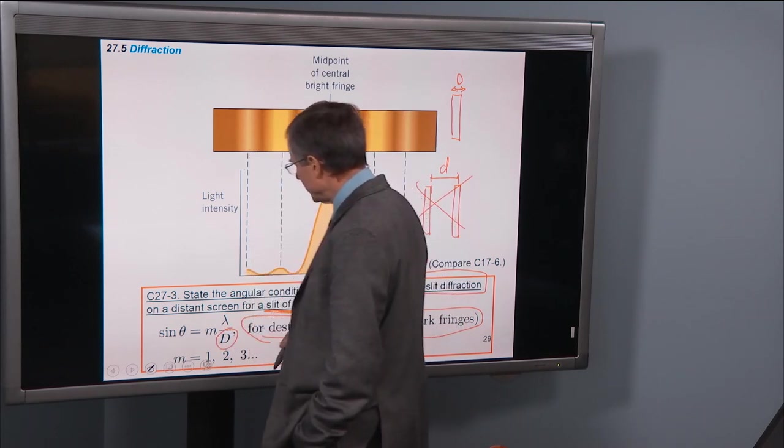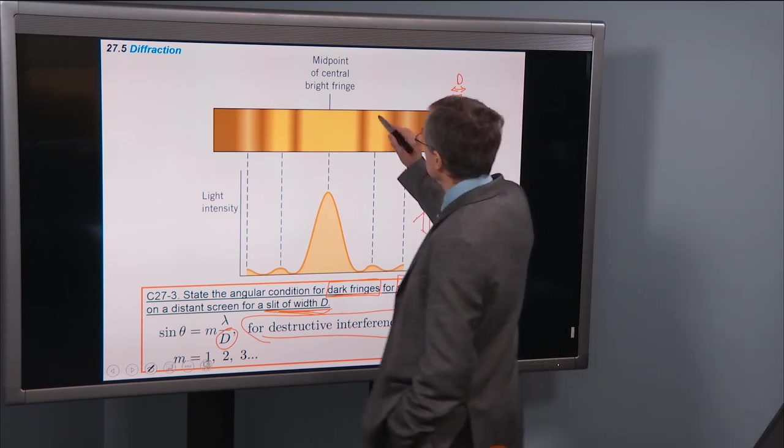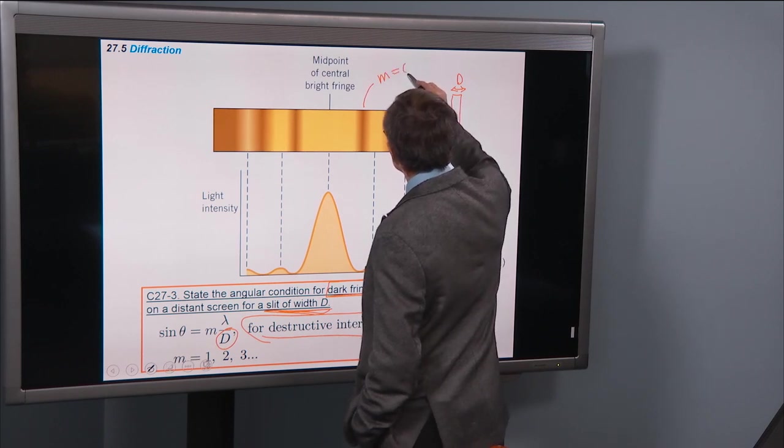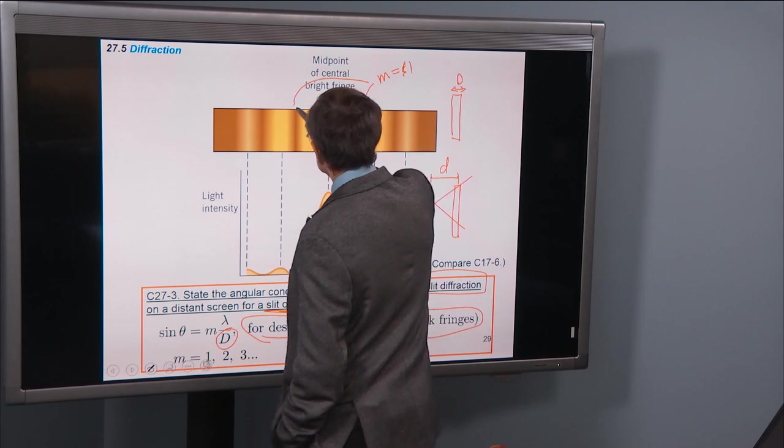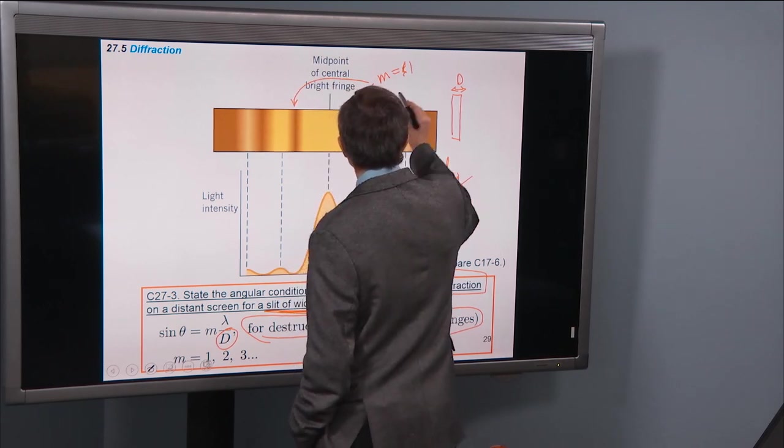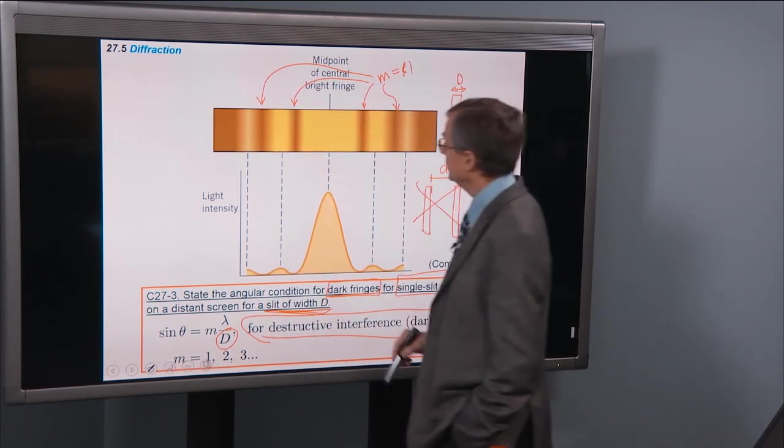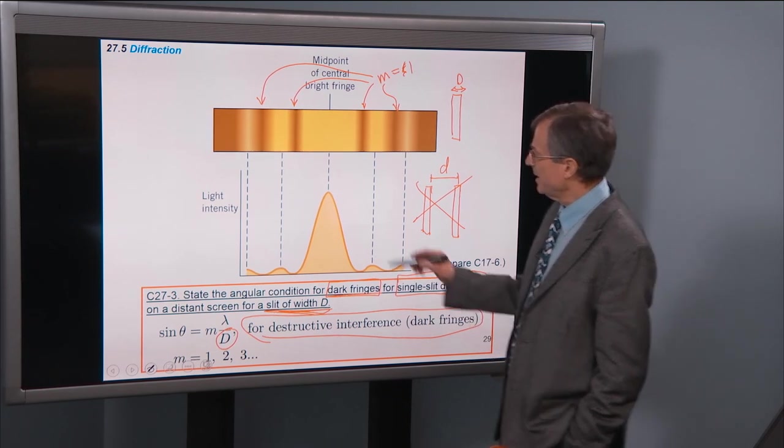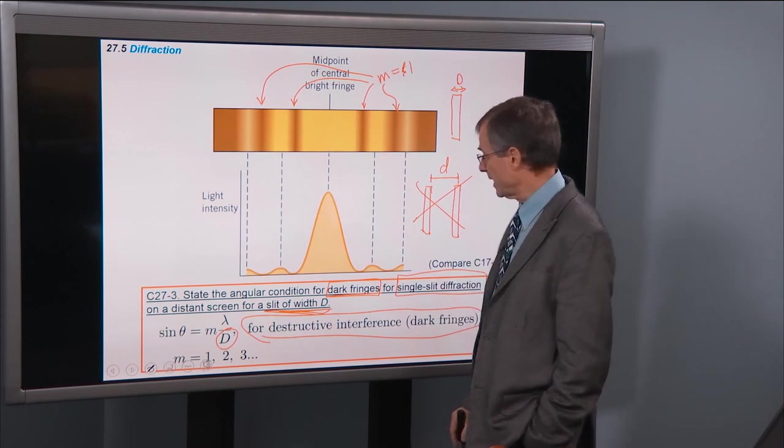So the width of the slit here goes here. m is 1, 2, 3. We don't get any m equals 0 for dark. So this is the m equals 1, this is also m equals 1, m equals 2, m equals 2, etc. So they're evenly spaced out, but without a dark one in the center, it turns out for diffraction.